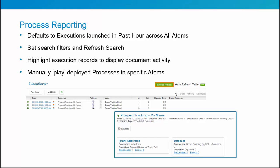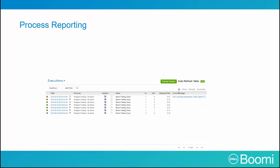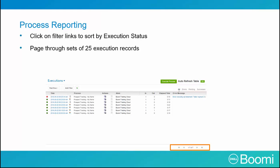You can manually execute deployed processes in a particular atom. The execution view captures some key processing statistics. You can click on filter links to sort by execution status, and you can page through sets of 25 execution records.